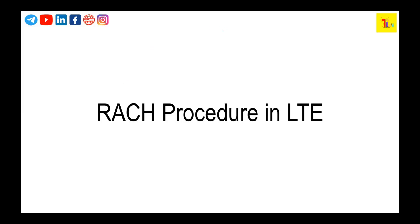First of all we need to understand what exactly RACH is. RACH basically stands for Random Access Channel procedure. Now the question comes: why is RACH required? We have already seen that whenever we switch on the UE, all the synchronization — PSS, SSS, MIB — has been done in the downlink direction. This is the first signal that is going to be synchronized in the uplink direction.